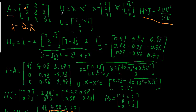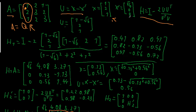My vector u is given by x minus x prime, where x is the first column vector of A — this one here. And x prime has as first element the norm of that vector x, so the square root of 1 squared plus 2 squared plus 1 squared. This is the first component of x prime, and all other components are 0. So my vector u is: 1 minus square root of 6, 2, and 1.